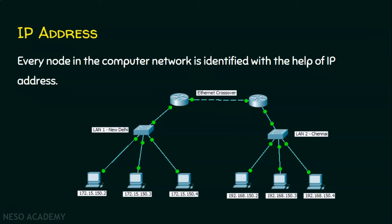This example involves a lot of end devices and a lot of intermediary devices. There is a computer and this computer wants to send some data to another computer. The computer with the IP address 172.15.150.2 is going to send some data to 192.168.150.2. So this is what we call an IP address, because every node in the computer network is identified with the help of an IP address only.